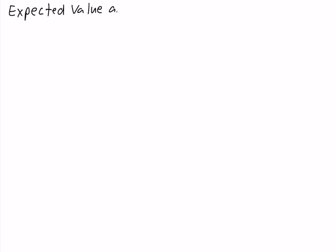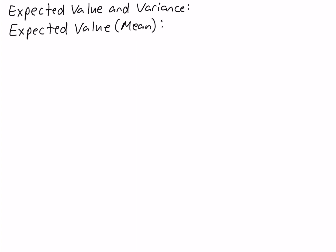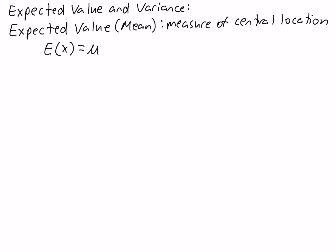Expected Value and Variance. What we're talking about here are the expected value and variance of a discrete random variable. The expected value, also known as the mean — like the mean of data — is a measure of central location. But here we're talking about a measure of central location for the random variable and not for data. The expected value can be written as E of X, or it can be written as mu, which is also the symbol for the population mean.